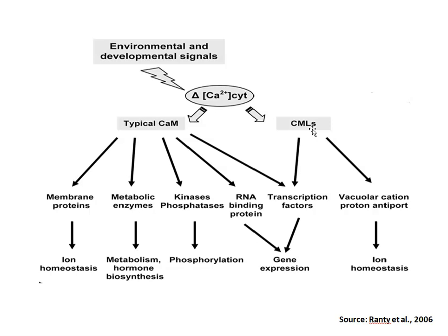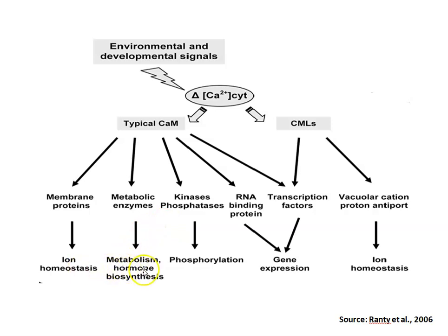These Calmodulin sensors and Calmodulin-like proteins are highly abundant in plant cells. They then interact with and modulate the activity of downstream target proteins — such as membrane proteins, metabolic enzymes, kinases, phosphatases, and transcription factors — to relay the calcium ion signal and initiate physiological, biochemical, or cellular responses.